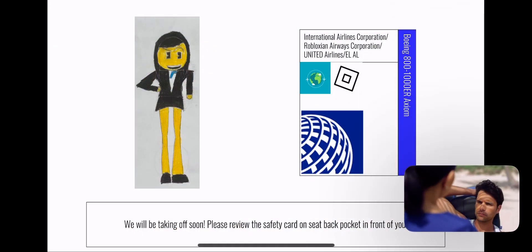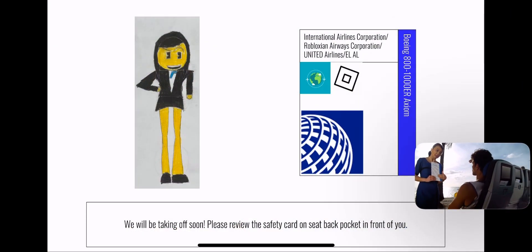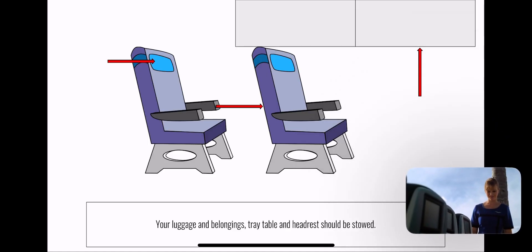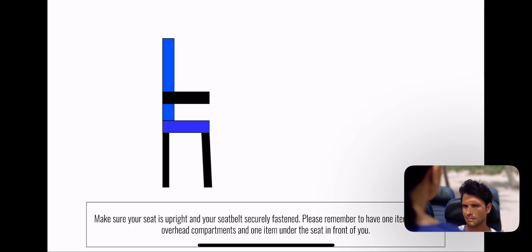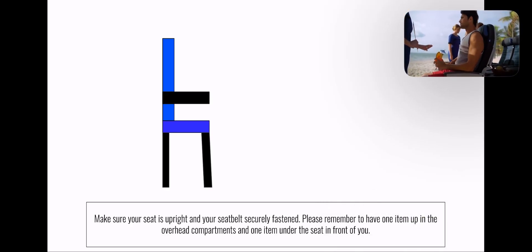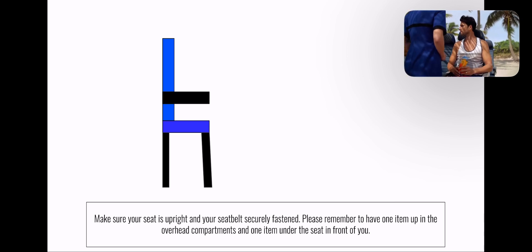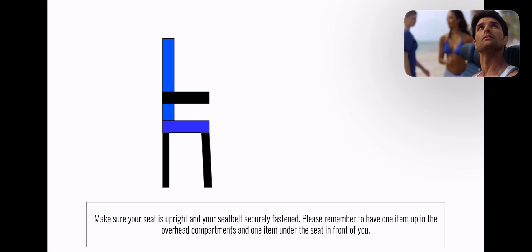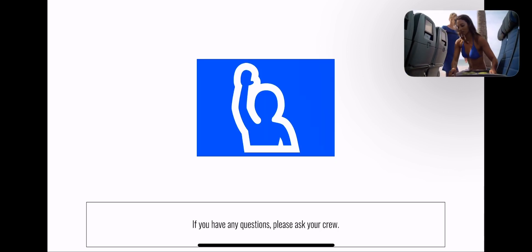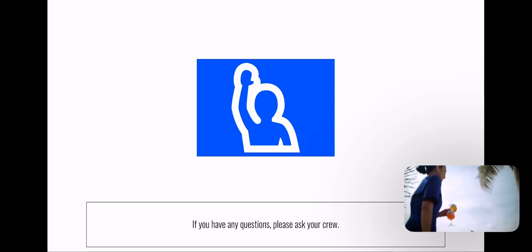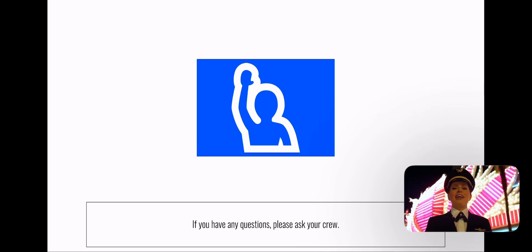We'll be taking off soon. Please review the safety card located near your seat. Store your tray table, carry-on items, headrest, and footrest. Make sure your seat back is upright and your seat belt is securely fastened. Please be considerate of other passengers by carrying on only one small bag and one personal item. Please place your personal item under the seat in front of you.